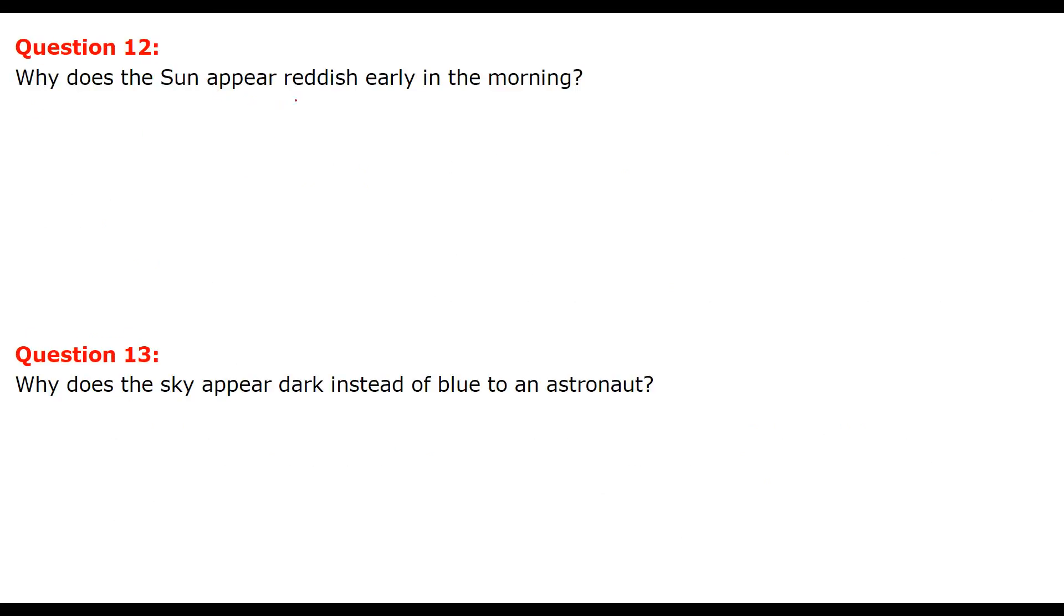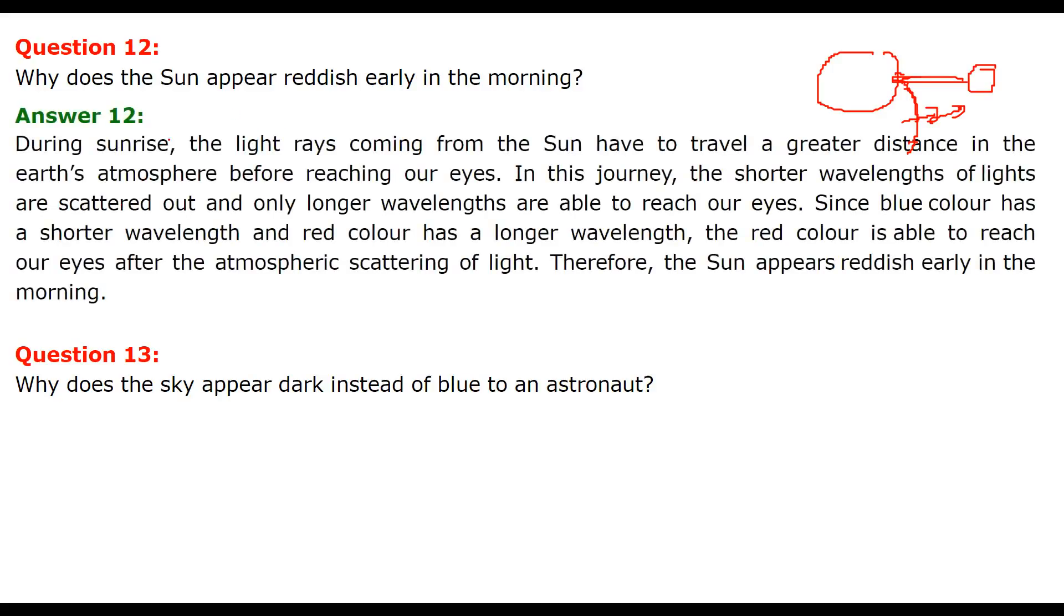Why does the sun appear reddish early in the morning? If this is earth, you are here and sun is here, so you are getting light but it has to travel a longer distance. When the sun is here, it's a shortest distance. So when it is a longer distance, that means it has to come all the way from here. And most of the wavelengths will be washed away, they will be scattered away. Here you are getting everything, but at this point you will get the reddish or the red component of the sunlight, which is actually having VIBGYOR colors, violet till red. So during sunrise, the light rays coming from the sun have to travel a greater distance in the earth atmosphere before it reaches our eyes.